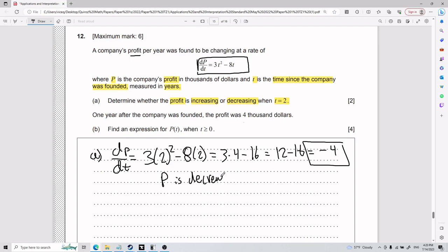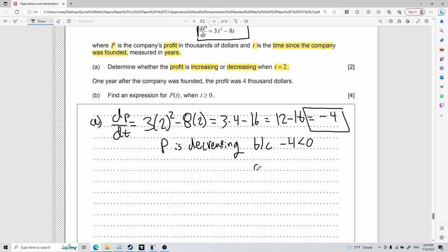And what is your argument? There's a couple ways you can put it, but the one that I like the most is just saying P is decreasing because dP/dt equals negative 4, which is less than 0. This is probably your safer bet. But point is, it's a negative, so then it has to be decreasing, period. That is for part A.